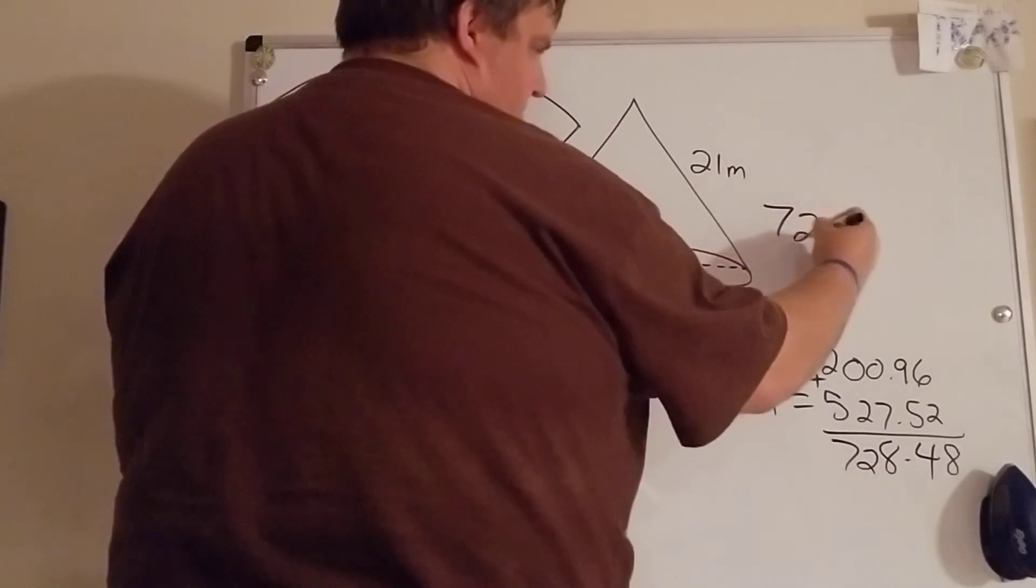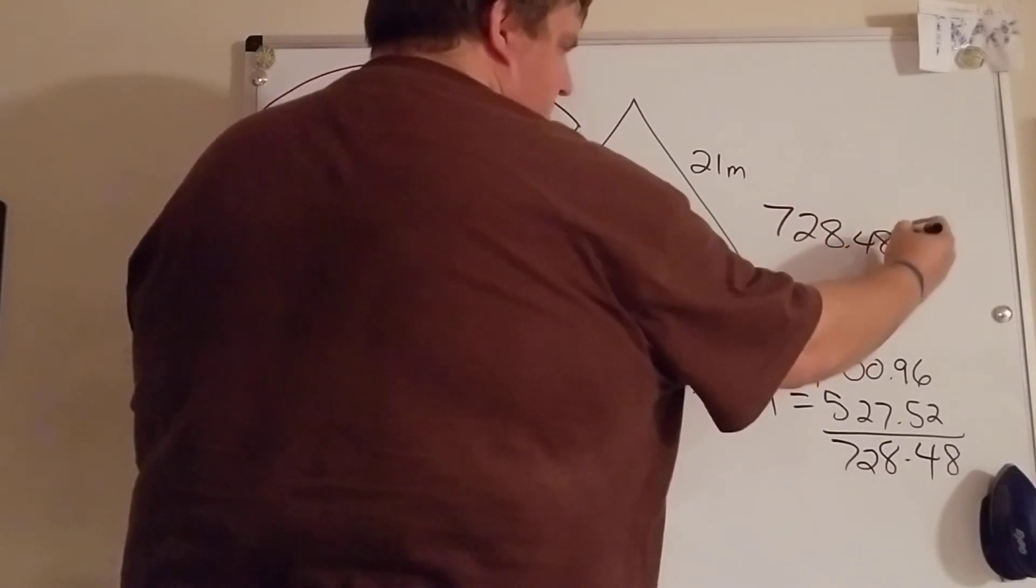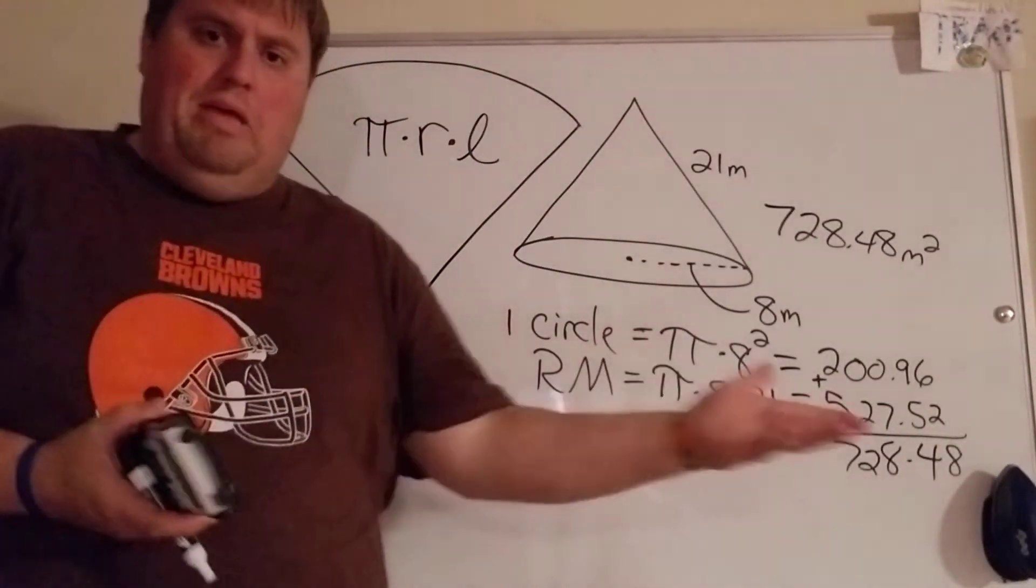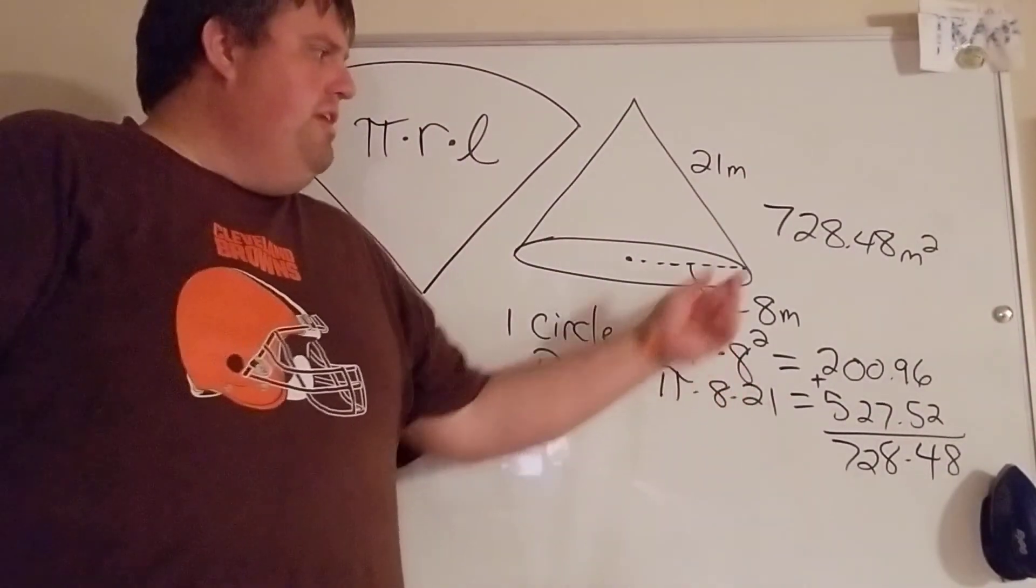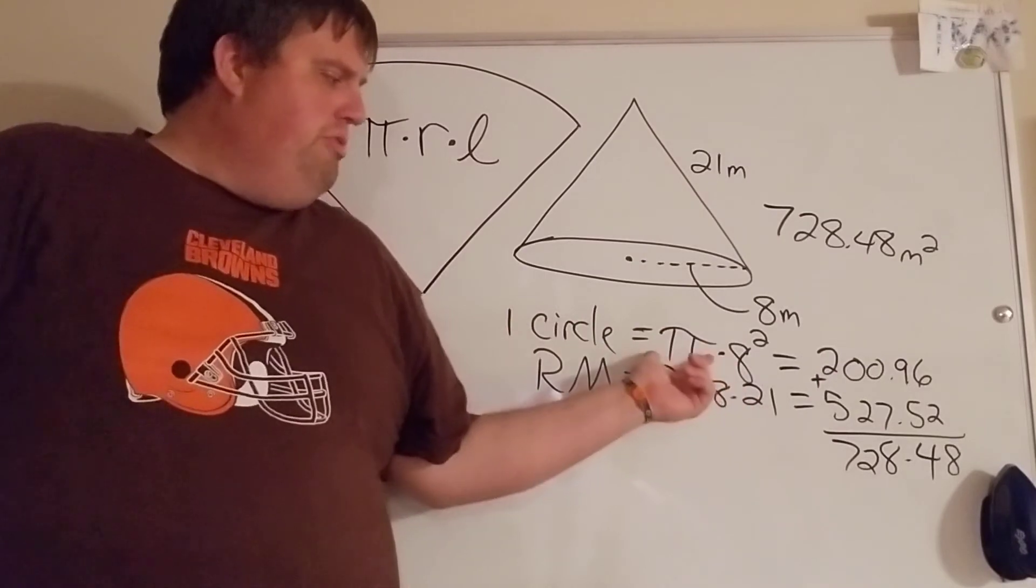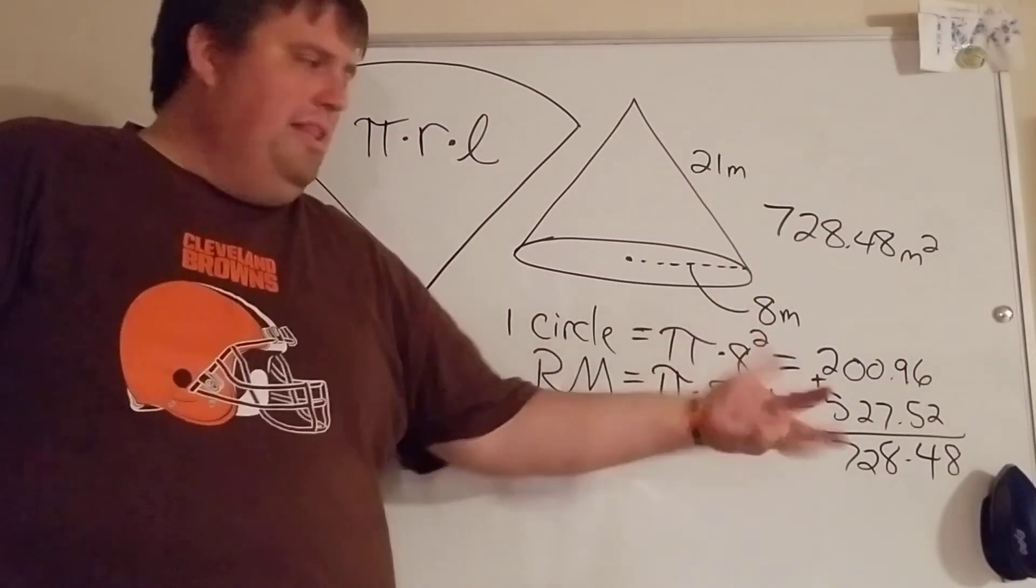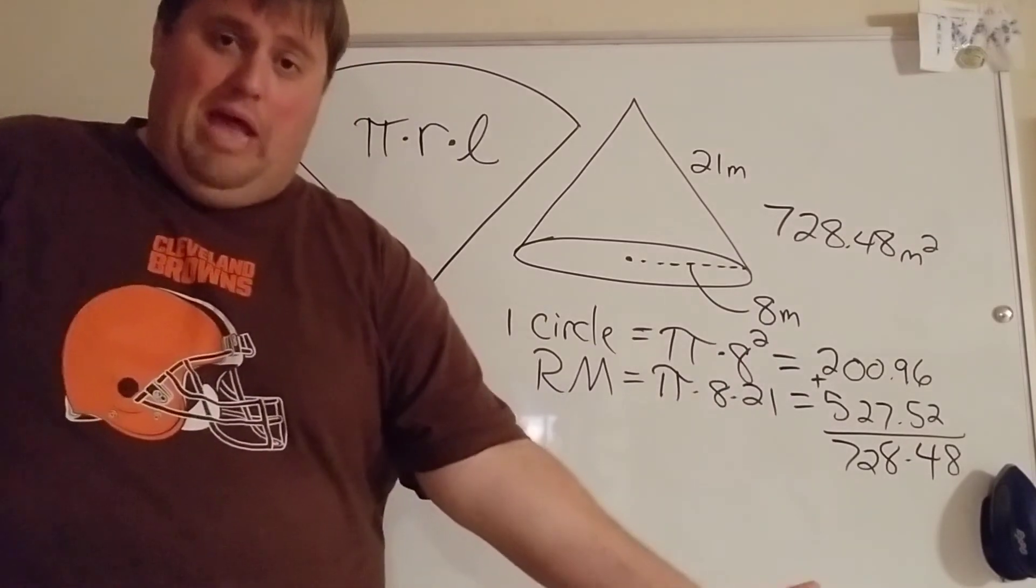So the surface area here is 728.48 meters squared. And I think me and Trevor were talking about this, but if your answer is a little different I am using 3.14 for pi. If you use the pi button your answer is going to be a little bit off. On your test that doesn't matter, you just got to be close and you'll be fine.